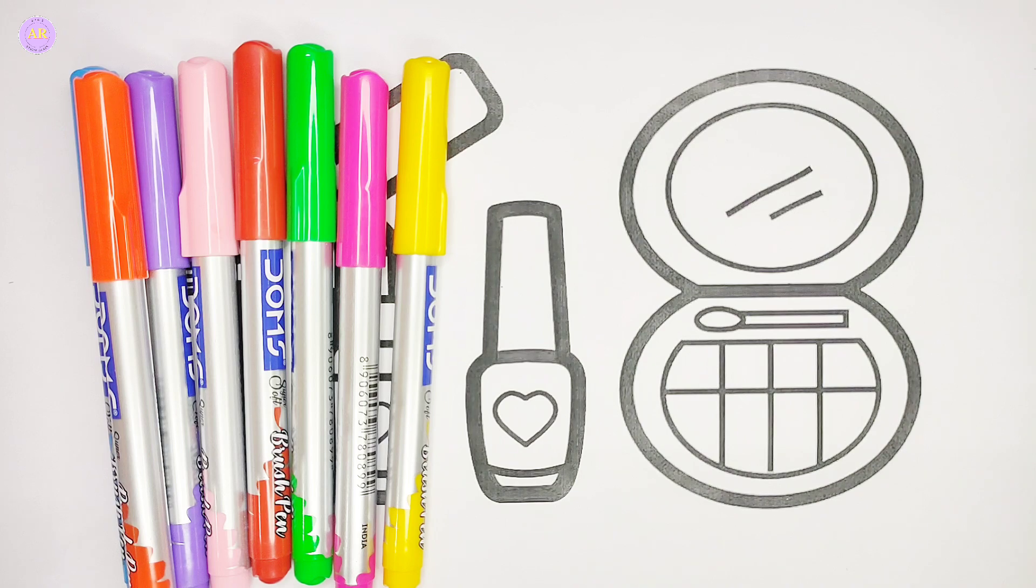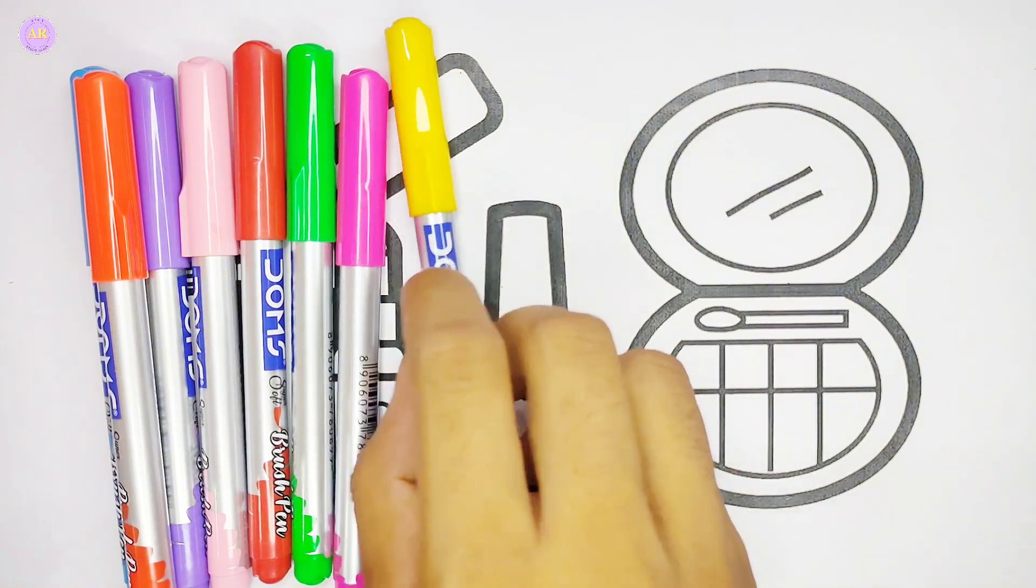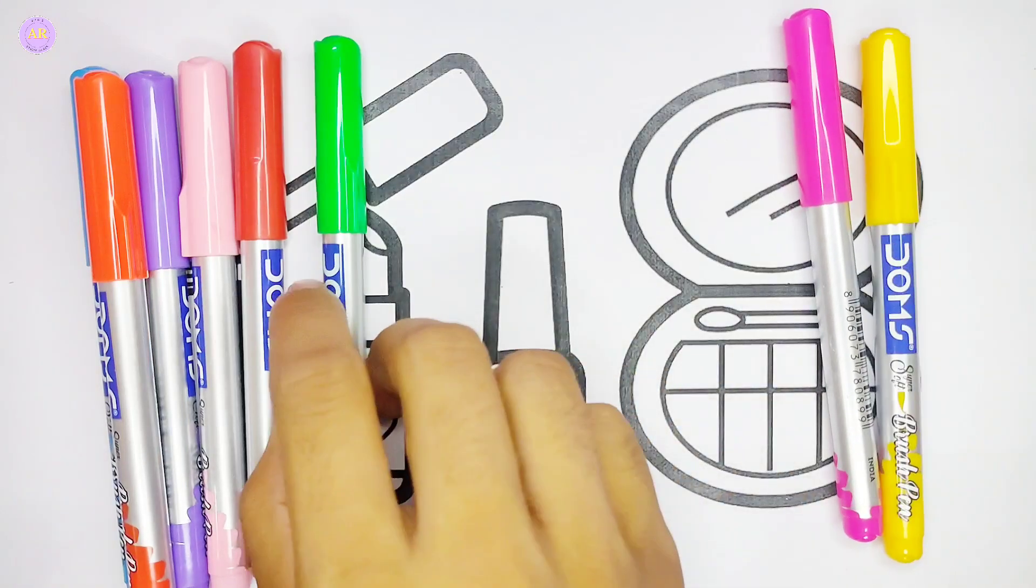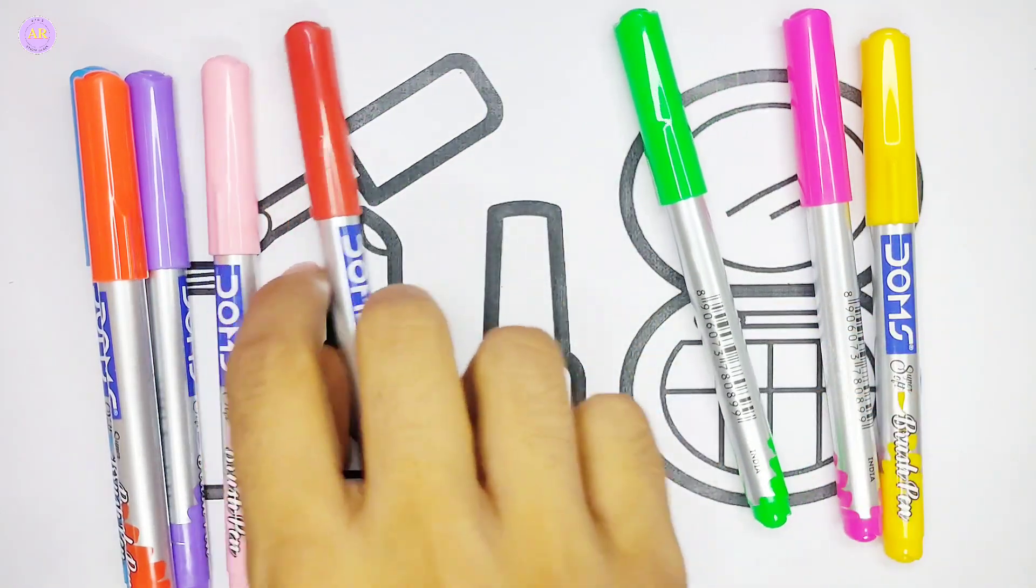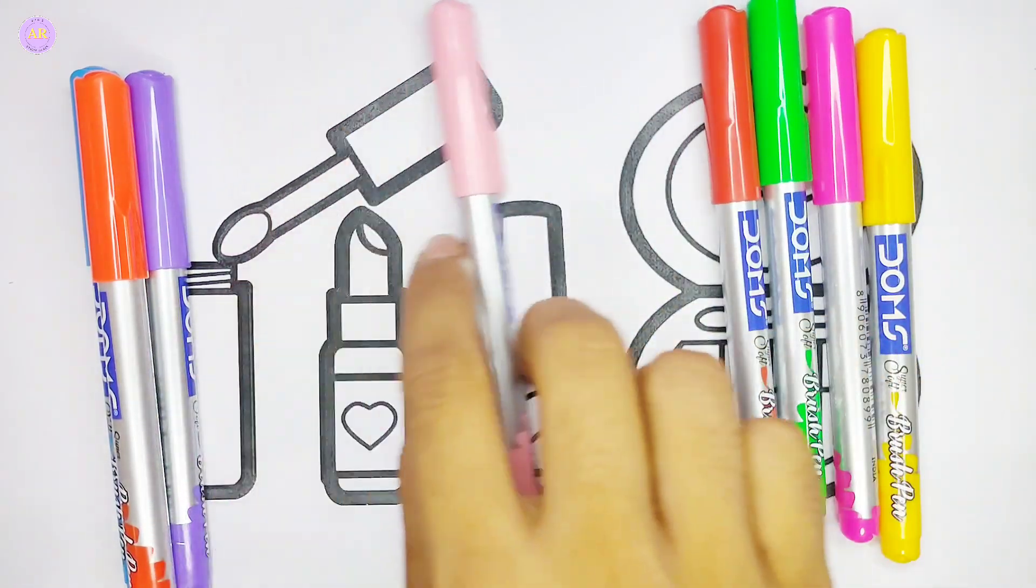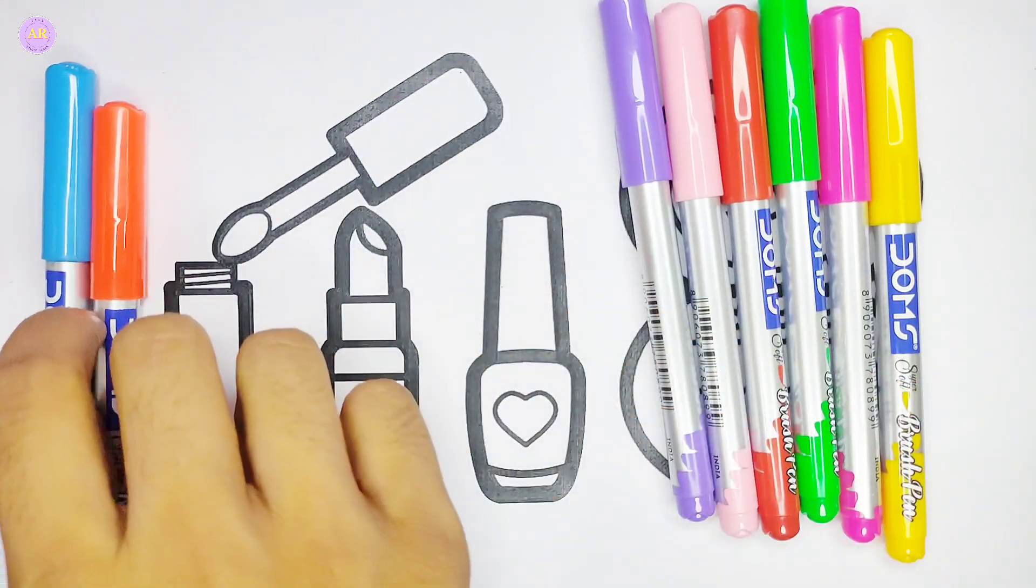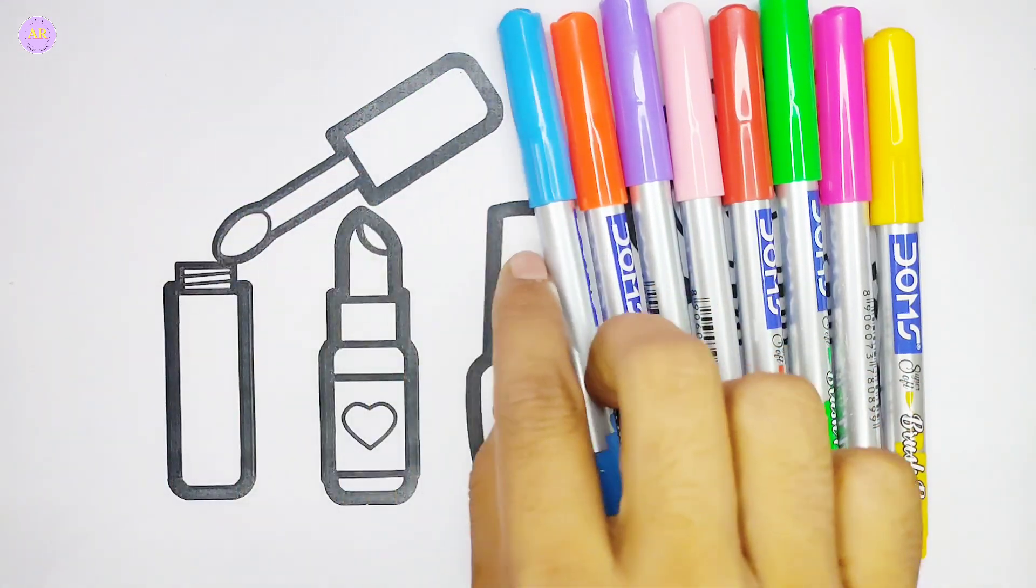Let's see the colors name. Yellow color, pink color, light green color, red color, baby pink color, purple color, orange color, sky blue color.